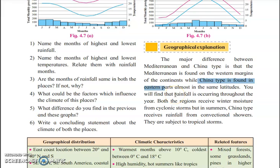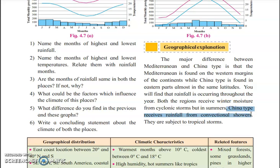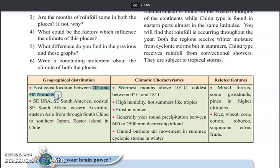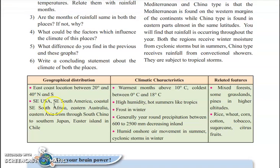In China type climate, rainfall occurs throughout the year. Both regions receive winter moisture from cyclonic storms, but in summers, China type receives rainfall from convectional showers. China type climate has convectional winds, and because of these convectional winds, there is precipitation in the form of showers. The latitudinal extension is from 20 to 40 degrees north and south. Areas under this region include south China, southeast USA, southeast South America, coastal areas of eastern Australia, eastern Asia — Japan, eastern islands — and Chile.